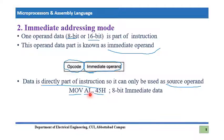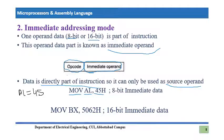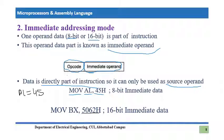After executing MOV AL, 45H, the register AL will equal 45H. Another example: MOV BX, 5062H — here 5062 is the immediate 16-bit value, as four hexadecimal digits represent 16 bits. This value will be stored inside BX. After execution of this instruction, BX will equal 5062H.